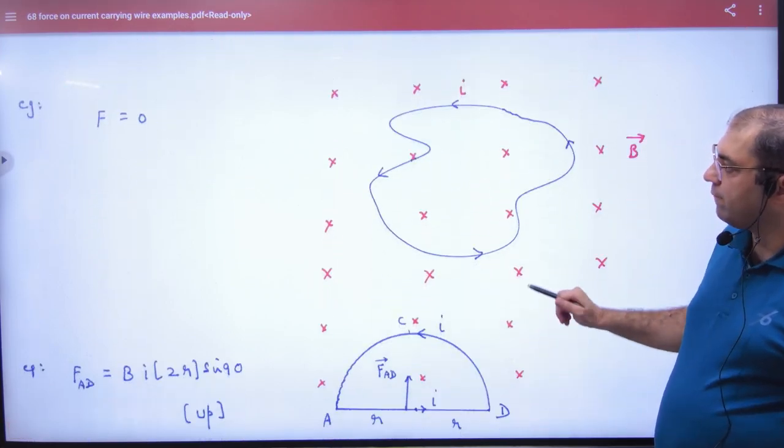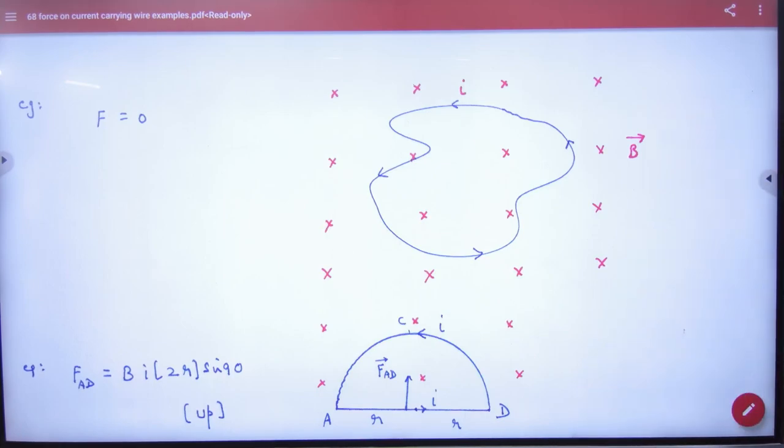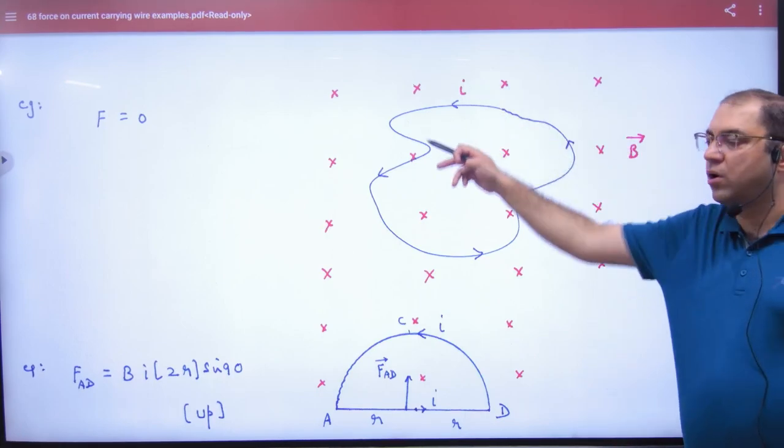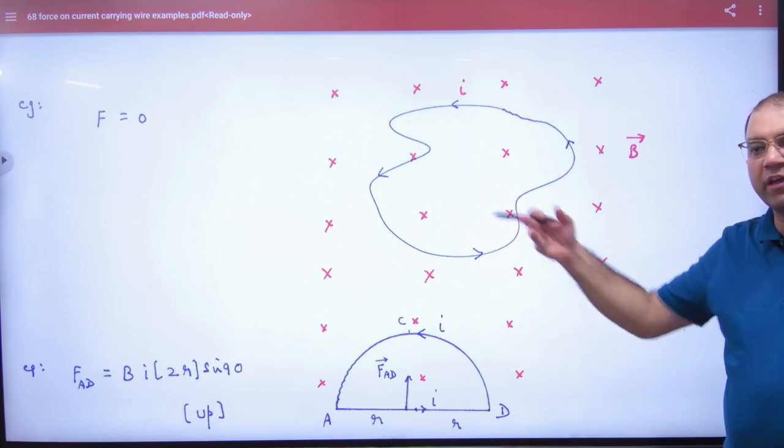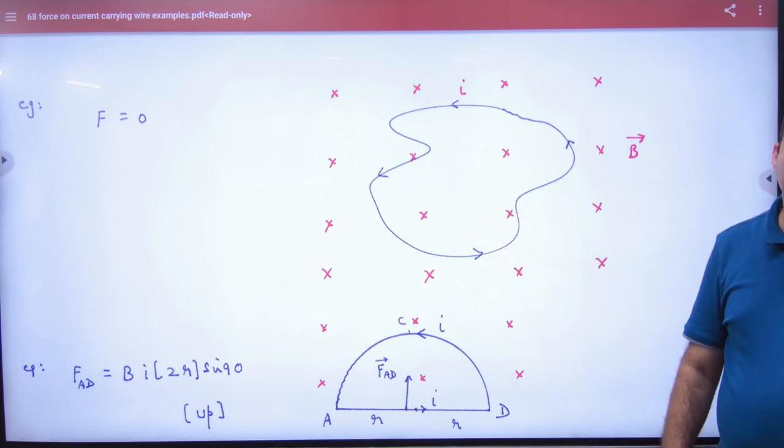Suppose you have a current-carrying loop where the current started and ended at the same point. What is the net displacement? Zero. What will be the force? Zero. But I have a question.